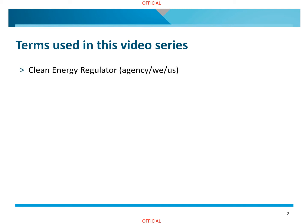Throughout this video series there are a range of terms used which have specific meanings. These include the Clean Energy Regulator, the Agency, We and Us, which all refer to the Clean Energy Regulator and may be used interchangeably. NGER refers to the National Greenhouse and Energy Reporting Scheme.